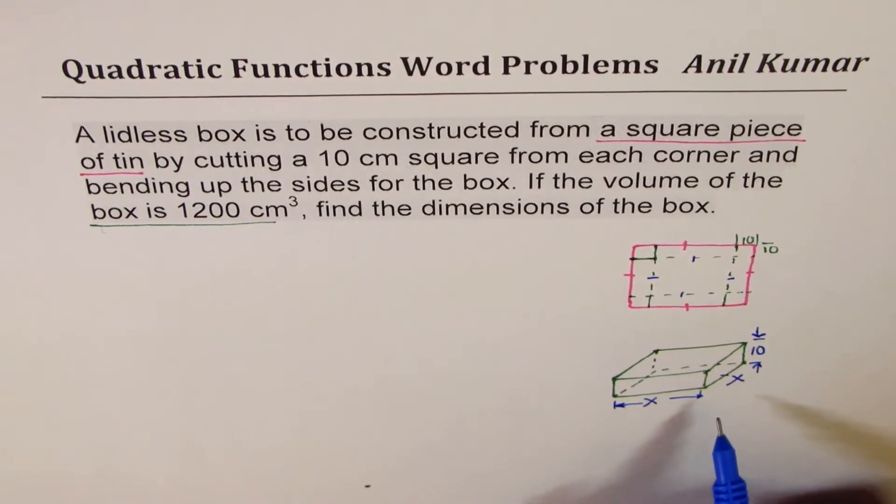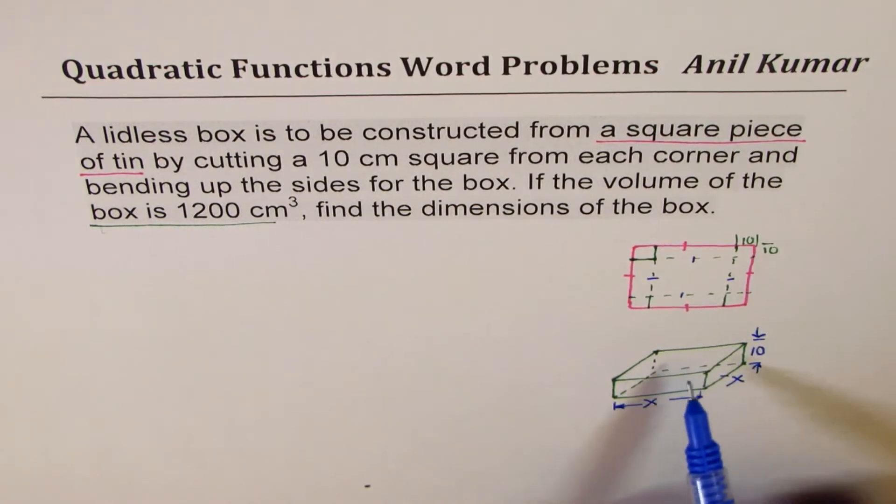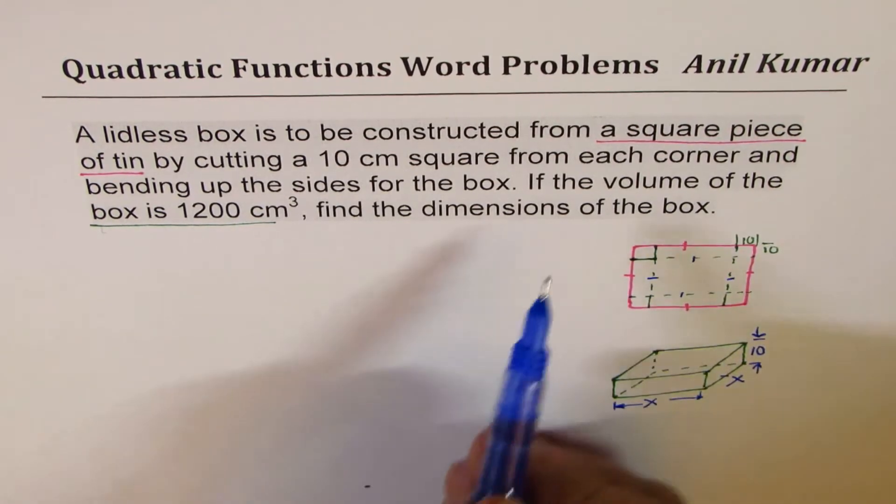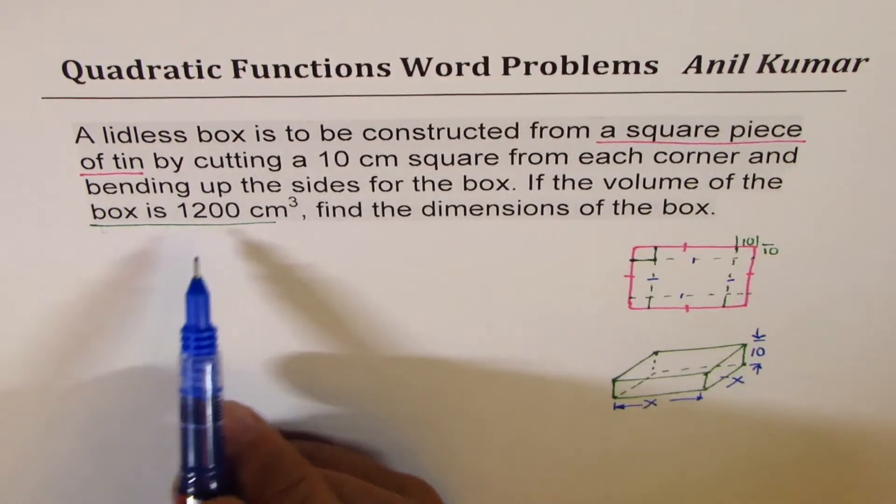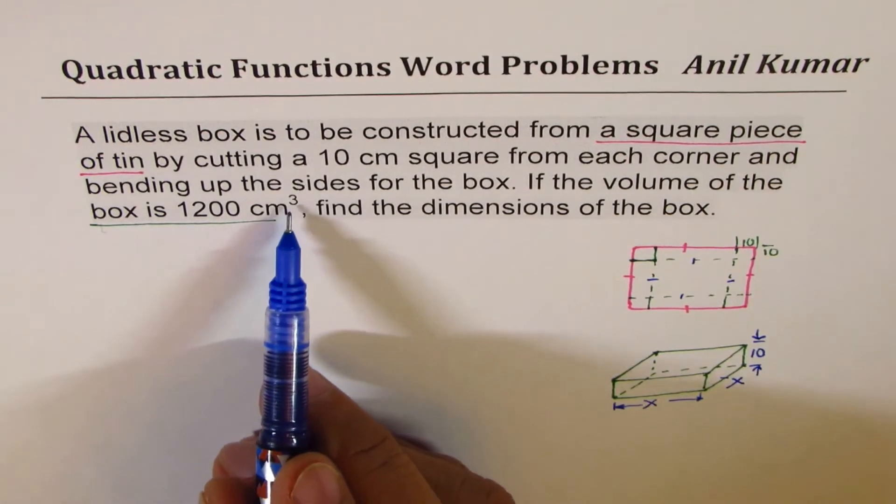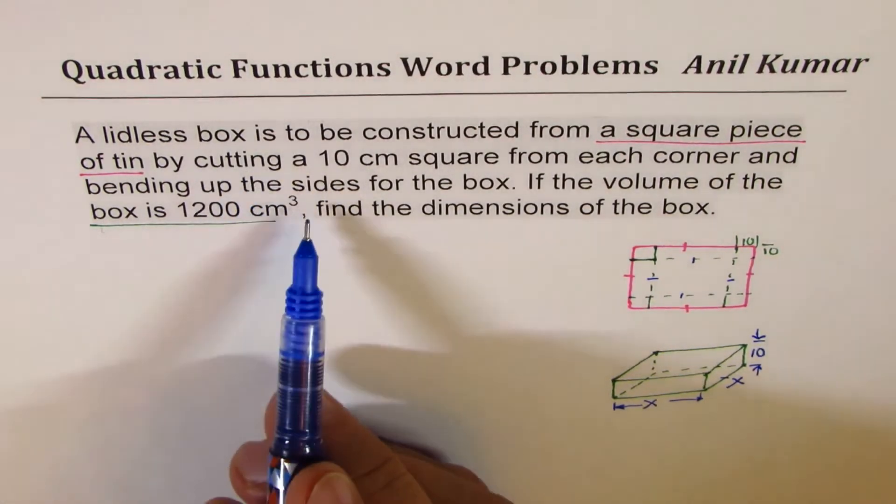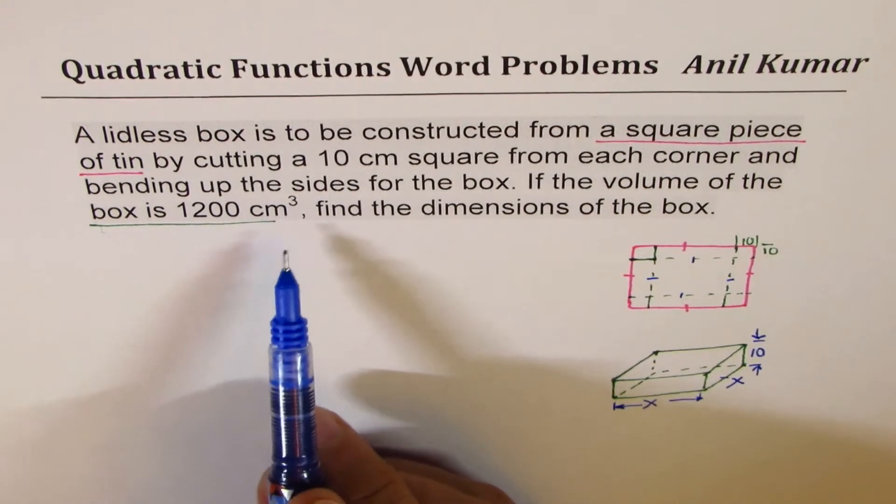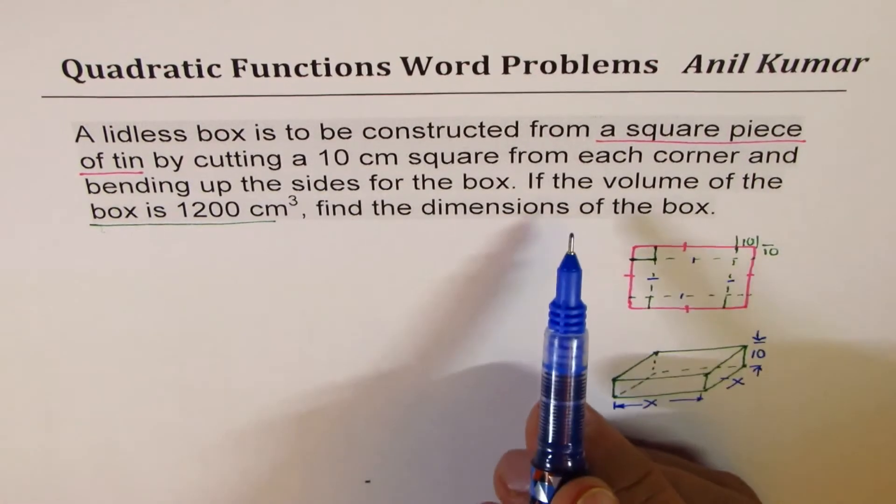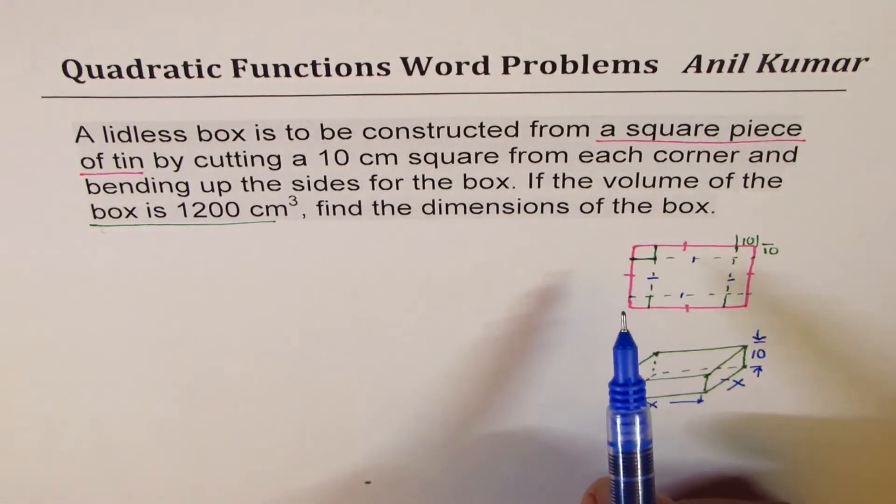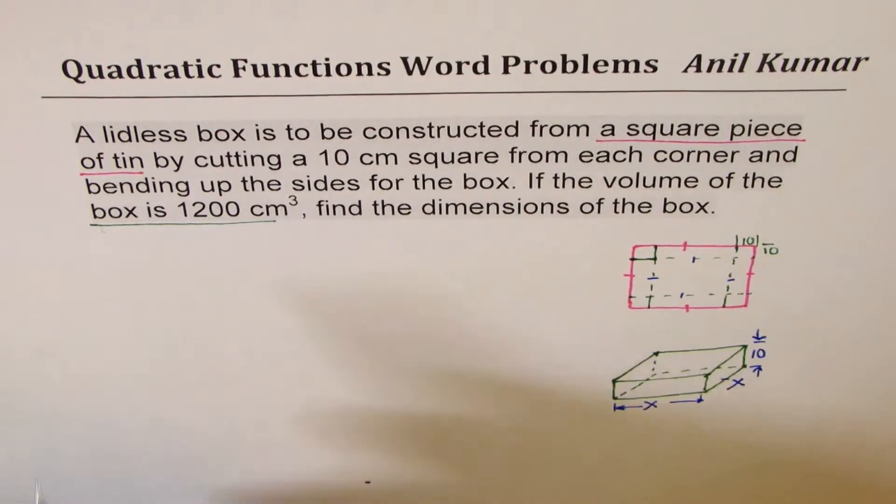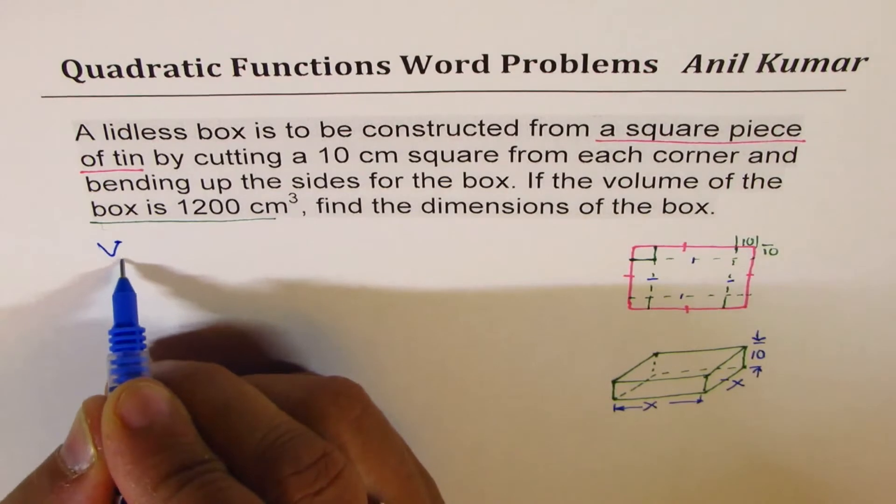Now I think we are ready to solve the question. First thing is to visualize, make a sketch, define variables. So we are saying let the side or the base of the box be x square units. If the volume of the box is 1200 centimeter cube, we say volume of the box is 1200 centimeter cube. So all units are in centimeters.